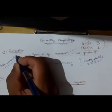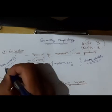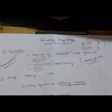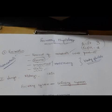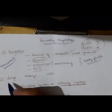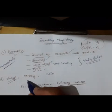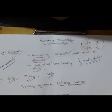Excretion is most important to maintain homeostasis — to maintain the constant internal environment so that all physiological functions will go on in a normal way. The major excretory organs found inside the body are the lungs, the kidney, and also the skin.